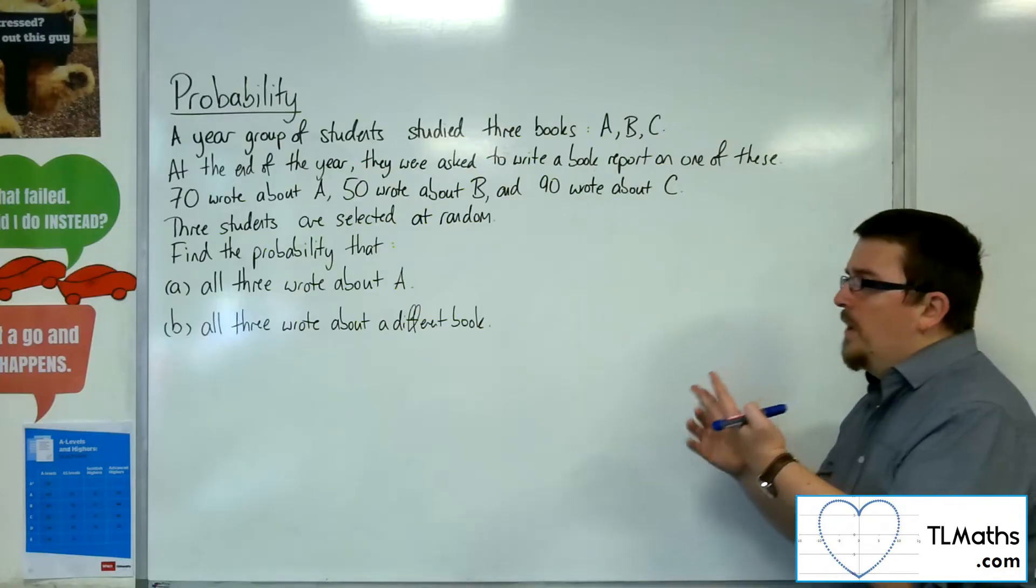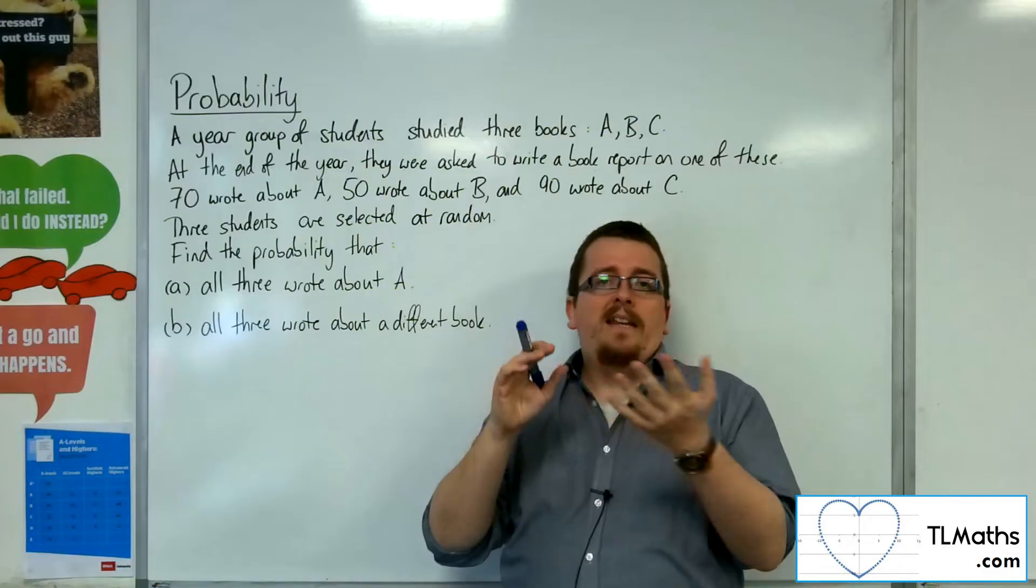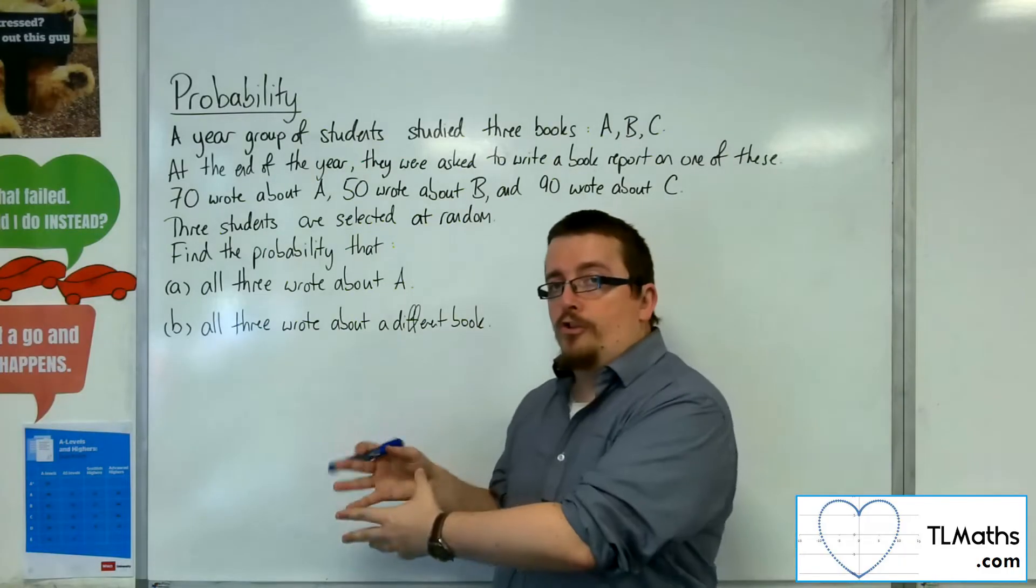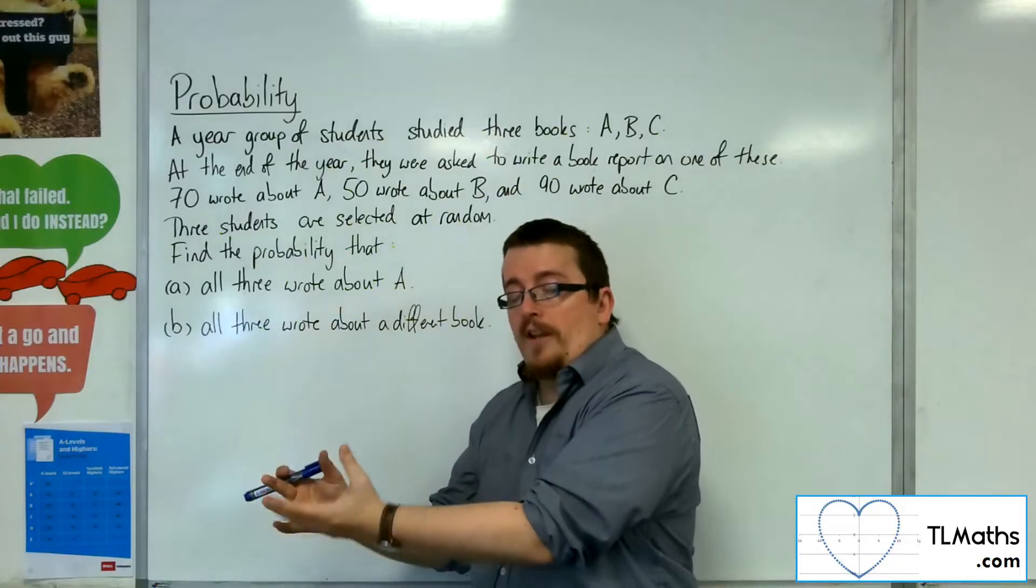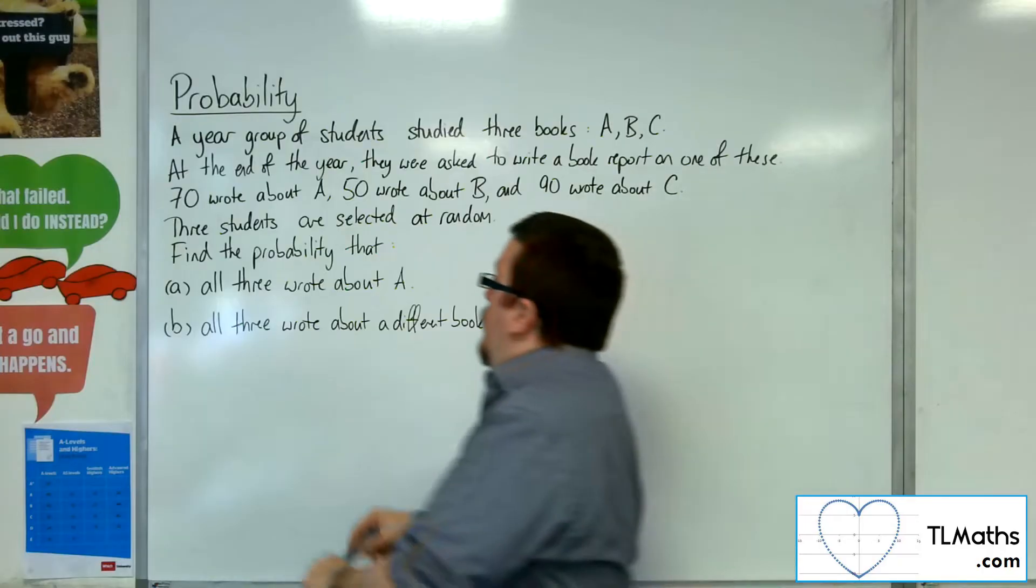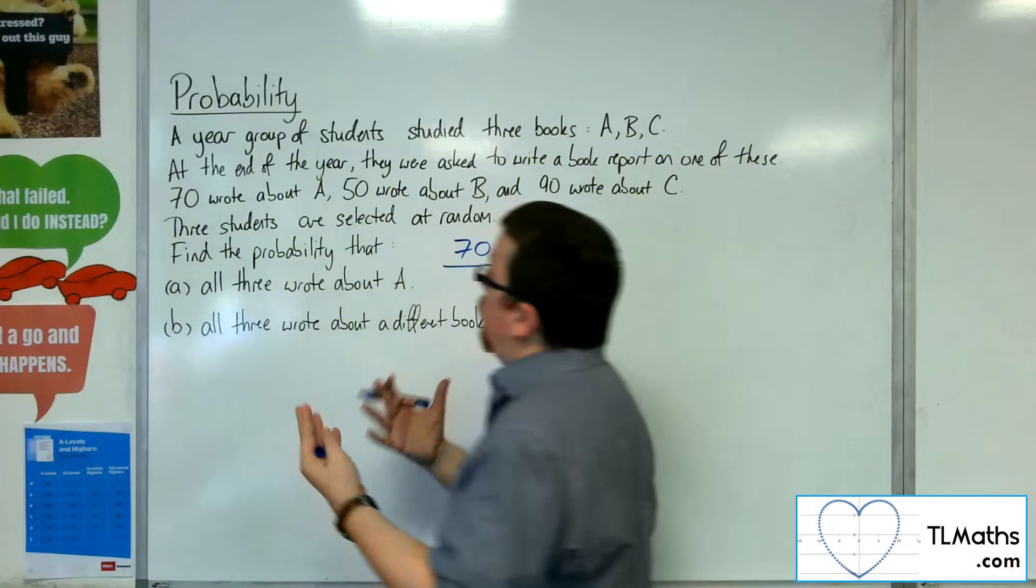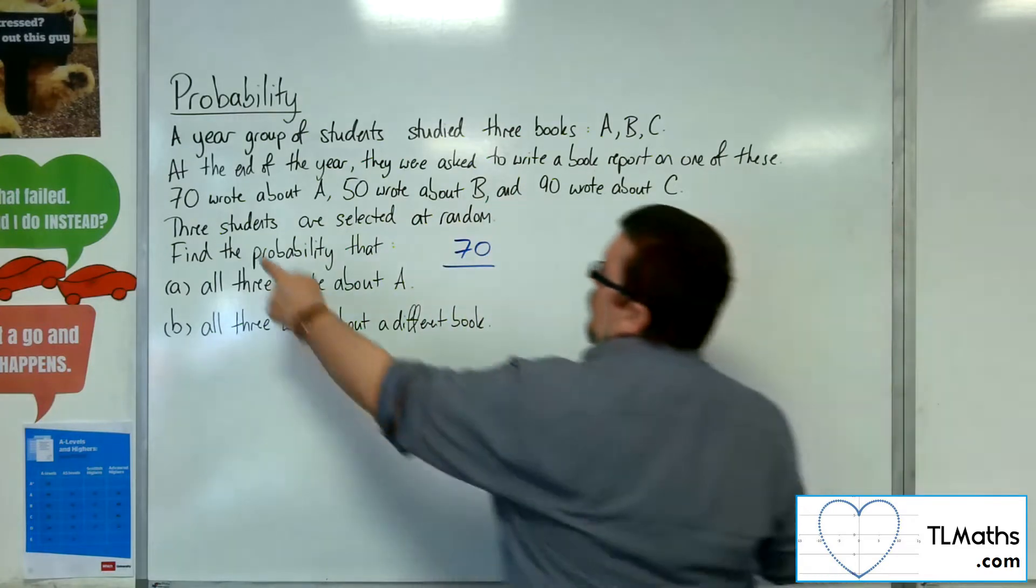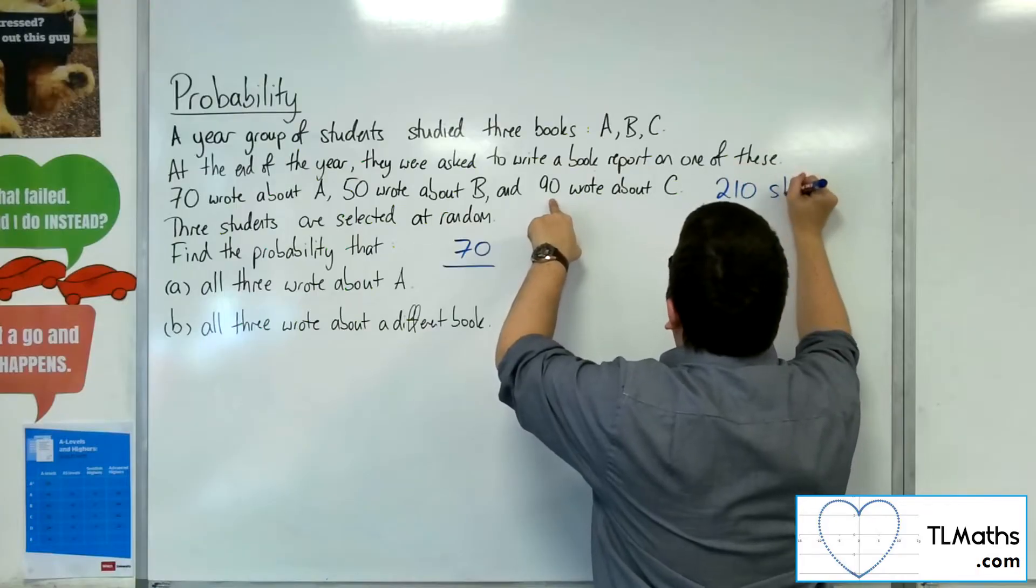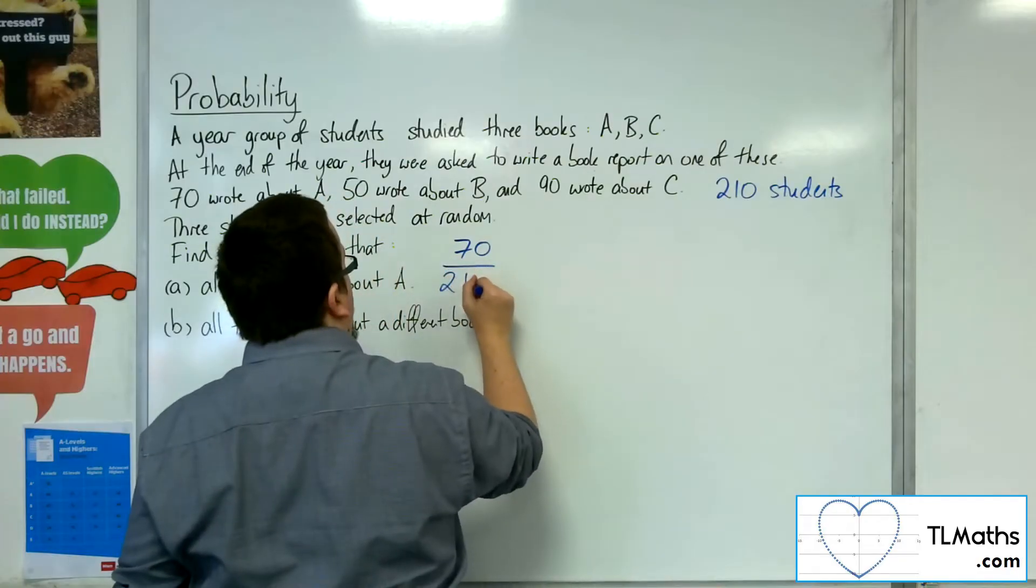The probability that all three wrote about A: we're going to physically pick out those students. The probability that the first student wrote about book A would be 70 out of the total number of students. We've got 70 plus 50, 120 plus 90, so there's 210 students altogether. It would be 70 out of 210.